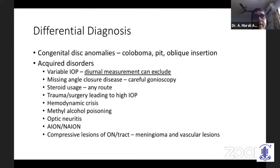Acquired disorders include variable IOP measurements — diurnal measurement and multiple measurements through the day can exclude high-pressure glaucoma being dubbed as NTG when only the off-peak IOP is recorded. Angle closure disease is sometimes misdiagnosed; careful gonioscopy is very important, as creeping angle closure can be missed. Steroid history via any route of administration can result in glaucoma appearing like normal tension. Prior ocular surgery leading to high IOP can also cause misdiagnosis of NTG.